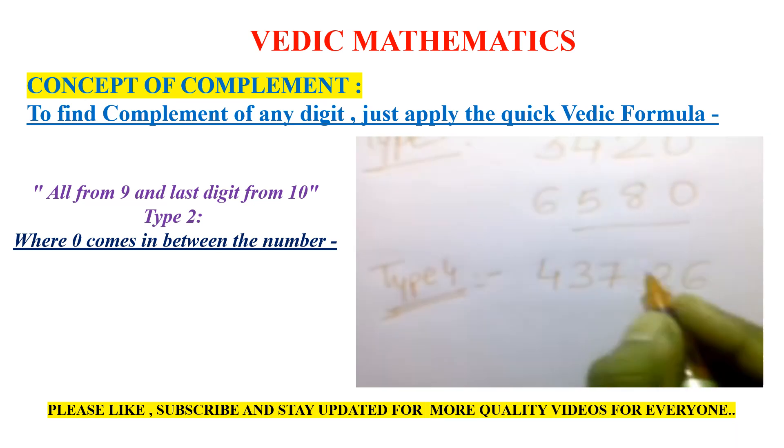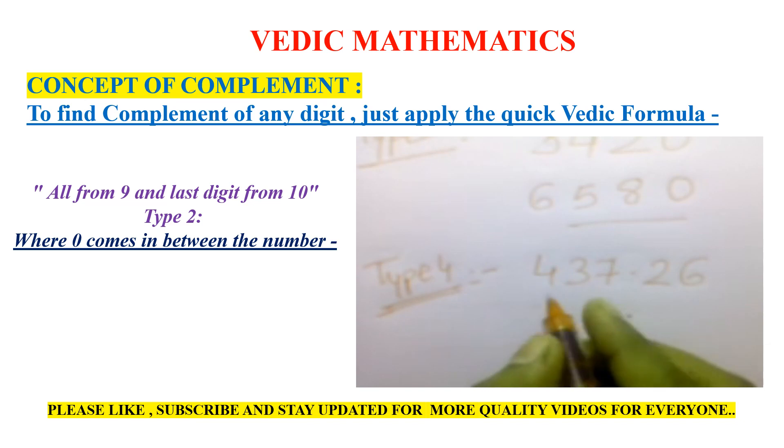For decimal numbers, we keep the decimal point in the same position. Apply the formula all from 9. The complement is 5, 6, 2, then the decimal point, then 7, and subtract the last from 10. The answer is 562.074.